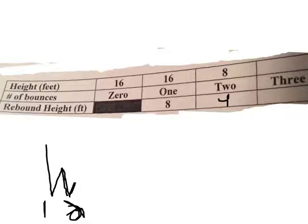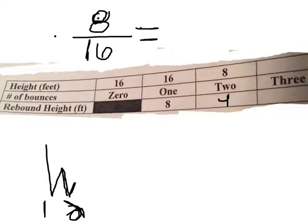The way we get that is we use the rebound ratio, which again, in the previous problems, we figured out that if you put the maximum height after the bounce over the previous maximum height and then simplify that fraction, you'll get the rebound ratio. In this case, eight goes into eight one time, eight goes into 16 twice, so the simplified fraction is one half.